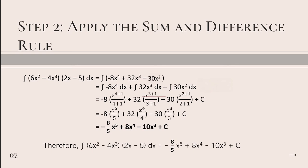32x raised to the power of 3 plus 1 all over 3 plus 1. Negative 30x squared, add 1 to the exponent, then all over 2 plus 1, then plus c.